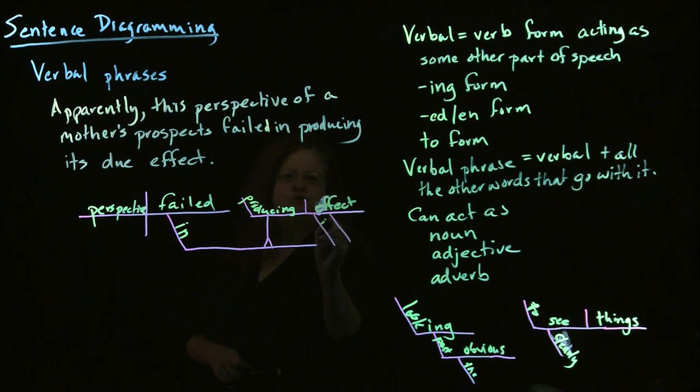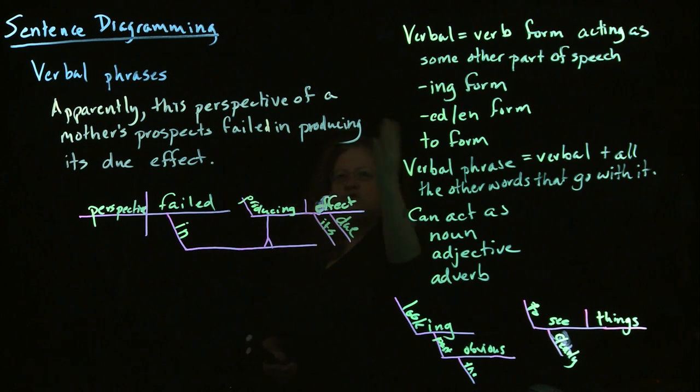And, we have its due modifying that. So, when you have a verbal phrase that's acting as a noun, you need to use this cake platter. Because, otherwise, the noun is normally on a line. And, if you have, especially if it's a noun that's acting as a direct object, you would have a direct object, and then a direct object, and a direct object. And, the sentence gets confusing. So, when you're using a verbal phrase as a noun, you need the cake platter.